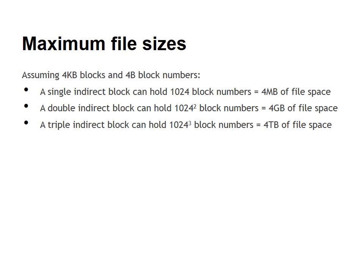In the INODE system, you can allocate up to a triple indirect block, and the INODE itself will hold up to 12 blocks. So the INODE will support files up to 48 terabytes in size. However, not all operating systems will actually have support for files that large.